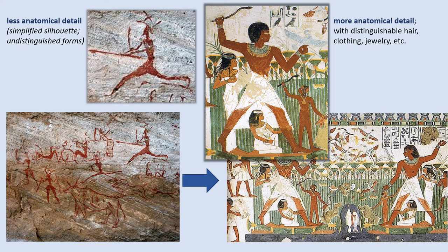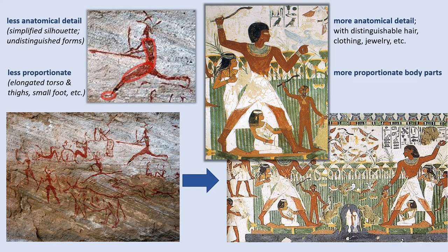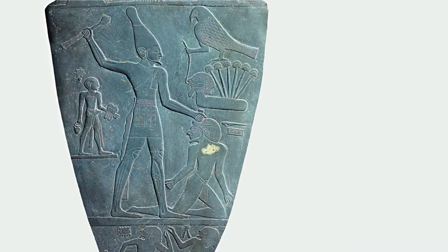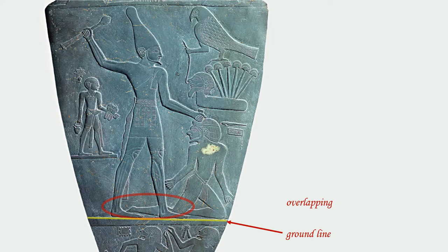The second step is putting these details together in a way that is accurate with regard to scale or proportions. Early on, the Egyptians used overlapping and ground lines, which both suggested a notion of place and space. However, aspects of their art remained highly conceptual. What I mean by conceptual is that it was an idea of the mind, rather than an observation of the eye, which would be perceptual.